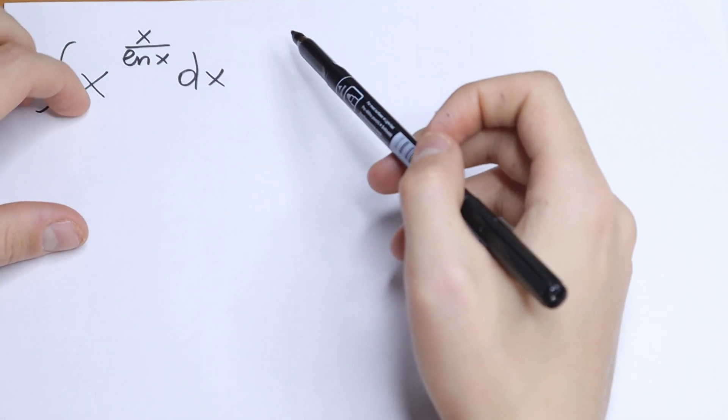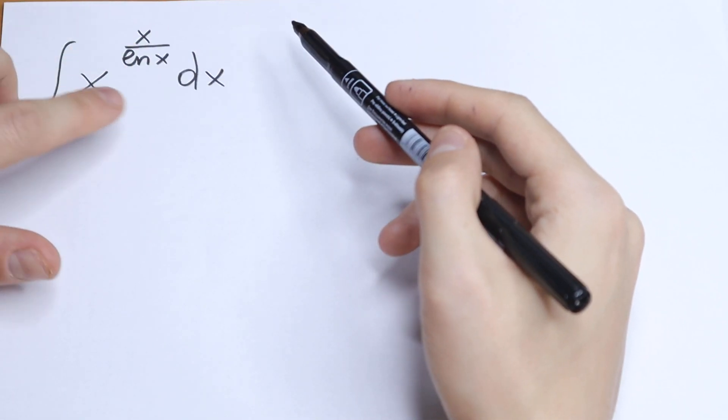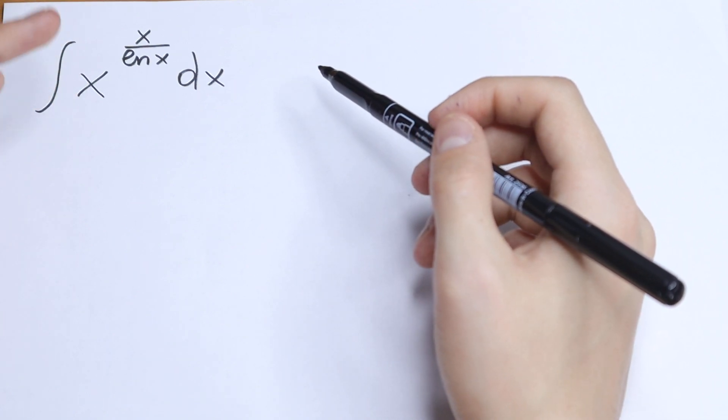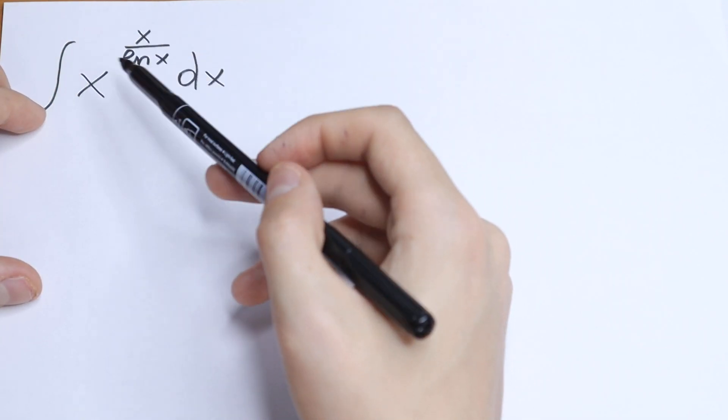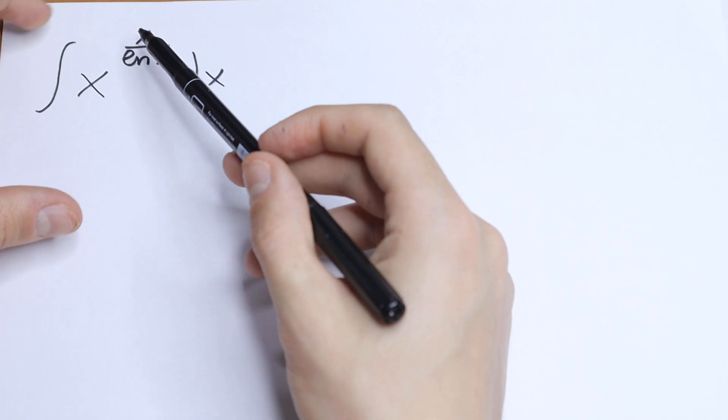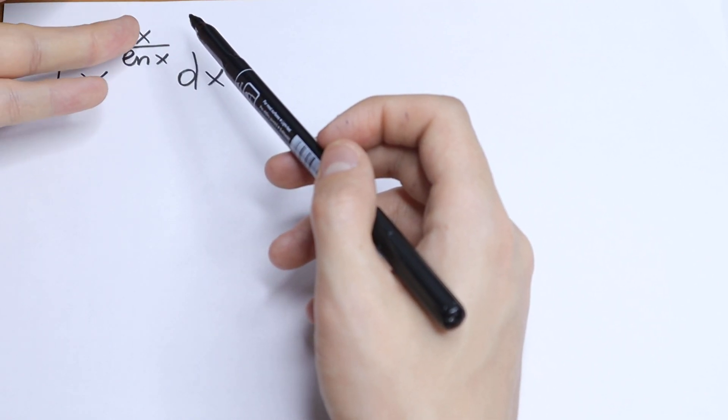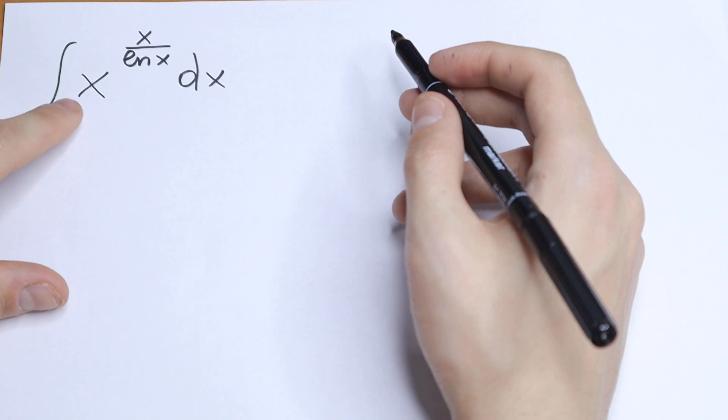What is the integral of the function x to the power x over natural log x dx? At first, this integral is really hard because we have x, we have an exponent, we have x and moreover natural log x. So at first, this integral is really hard.